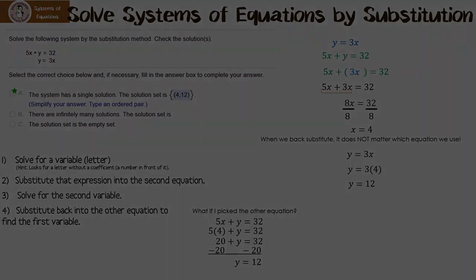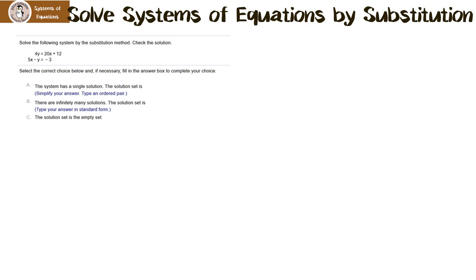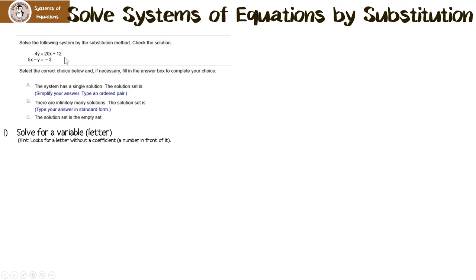Let's look at another example. Solve the following system by the substitution method. First, look for a variable by itself — we want y equals or x equals. The hint is to look for a letter without a coefficient. If I look at the first equation, all I have to do to get y by itself is divide everything by 4. That's much easier. So: 4y equals 20x plus 12, divide everything by 4, and that gives us y equals 5x plus 3.